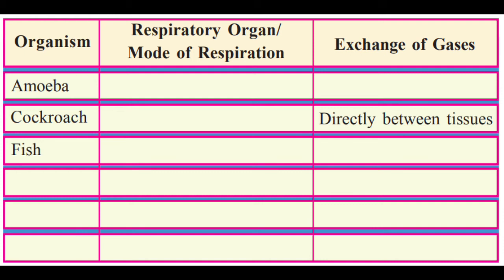In amoeba, the respiratory organ is the cell membrane and the mode of respiration is diffusion. Amoeba is a unicellular aquatic organism with no special organ system — gaseous exchange takes place between the surrounding water and the cell membrane by diffusion. In cockroach, the respiratory organ is spiracles — minute pores visible on the dorsal side of the body. Air enters through spiracles into a network of tubules that reaches every cell, and carbon dioxide is also released through the spiracles.